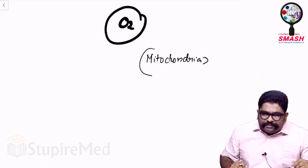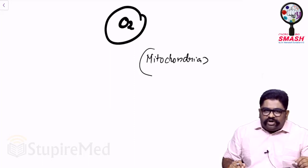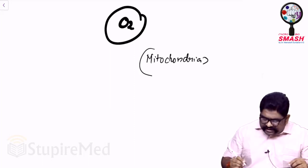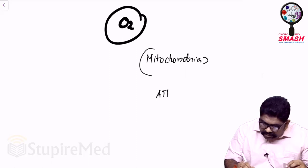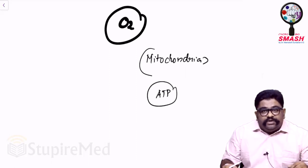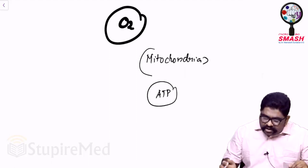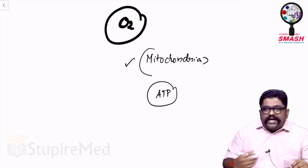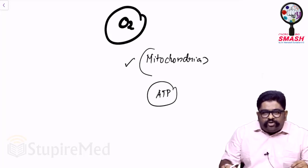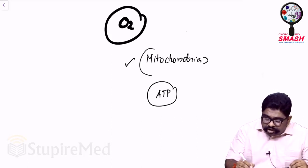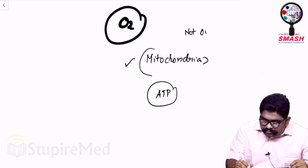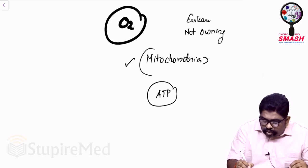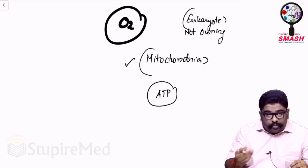What happens in anaerobic respiration? You don't have much oxygen, because of which ATP synthesis will not be optimum in anaerobic metabolism. For aerobic metabolism to happen, you depend on mitochondria. Do we actually own mitochondria? Eukaryotic cells contain mitochondria, but they do not own it.